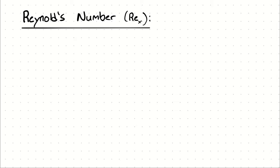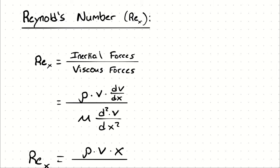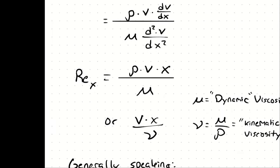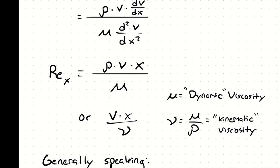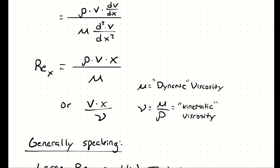One of the most useful non-dimensional numbers for this purpose is the Reynolds number, which is a ratio of inertial forces to viscous forces within a fluid which is subjected to relative internal movement due to different fluid velocities. This proportion can be simplified to the density times the velocity times a size parameter divided by the dynamic viscosity of the fluid.